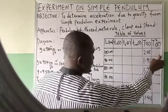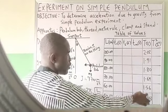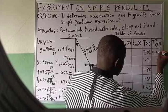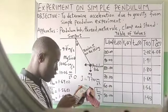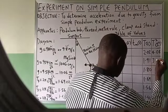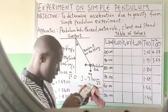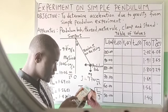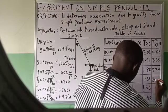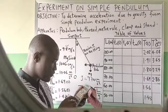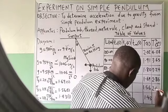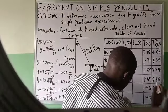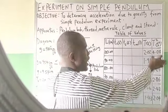After getting all T values, we square each one: 2.02 squared gives 4.0804 s²; 1.91 squared gives 3.65 s²; 1.80 squared gives 3.24 s²; 1.69 squared gives 2.86 s²; 1.56 squared gives 2.43 s²; 1.43 squared gives 2.04 s². We have now obtained all values of T and T².